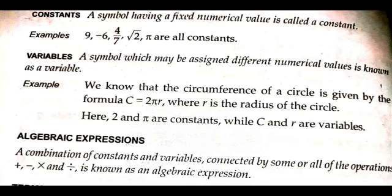The next important term is variable. A symbol which may be assigned different numerical values is known as a variable. For example, the circumference of a circle is given by the formula C = 2πr, where r is the radius of the circle. Here 2 and π are constants, while C and r are variables.